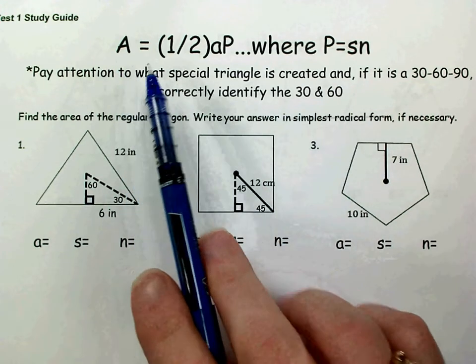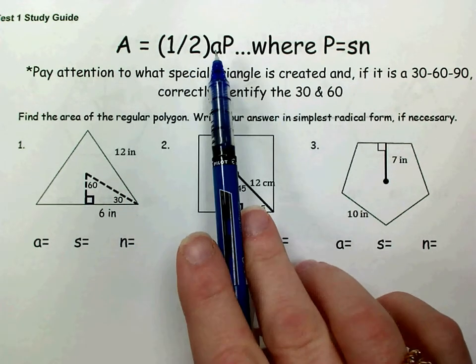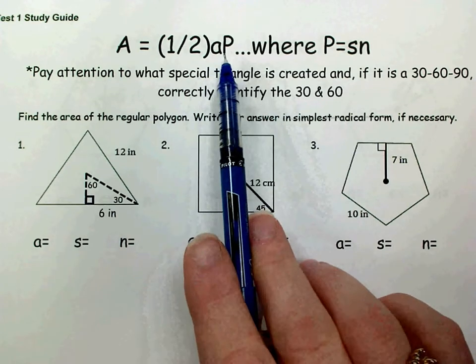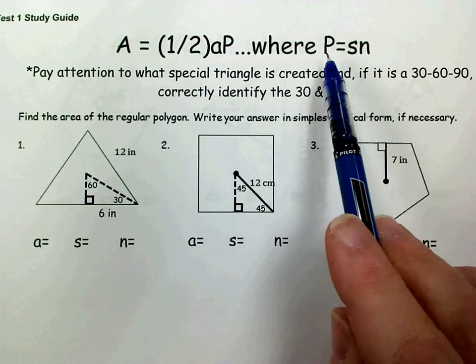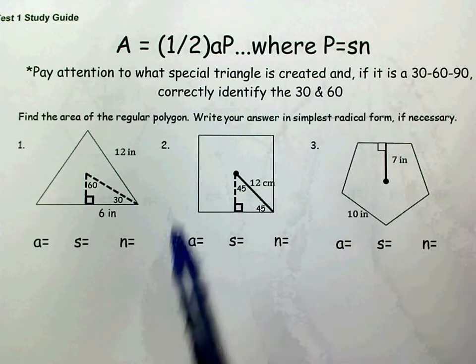Remember your formula for finding the area of a regular polygon is 1/2 times the apothem times the perimeter, where the perimeter is found by multiplying the side length times the number of sides.